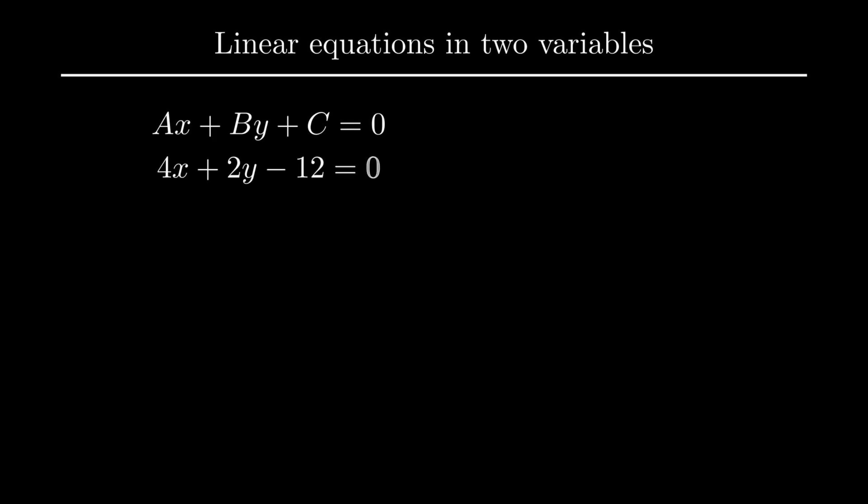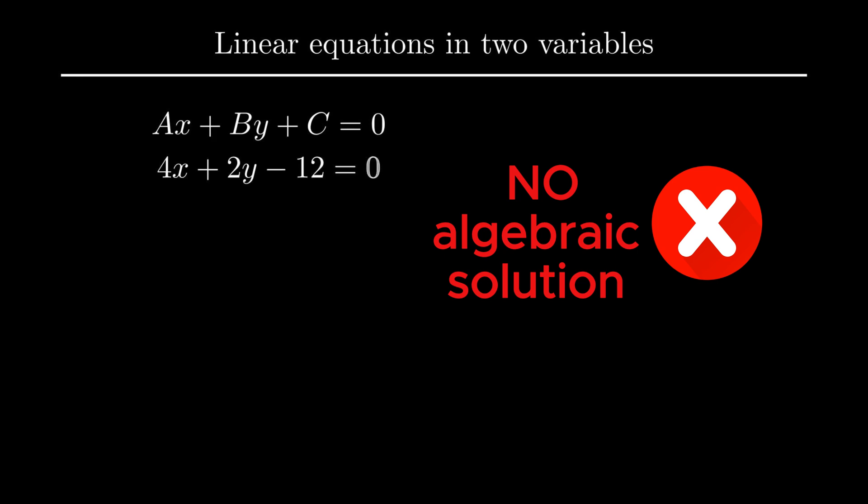Let us consider 4x plus 2y minus 12 equal to zero as the linear equation in two variables. Algebraically we are not able to simplify this as two different variables can't be simplified. So there is only graphical method to find the solution of the given equation.